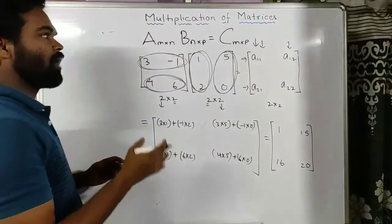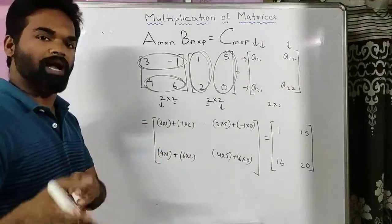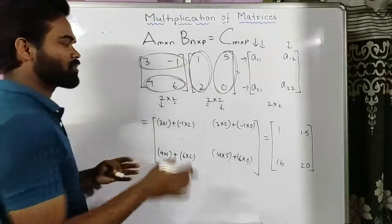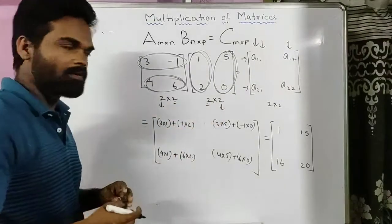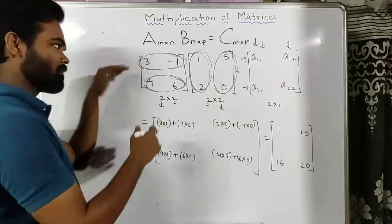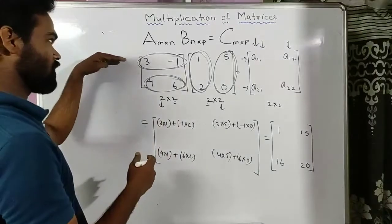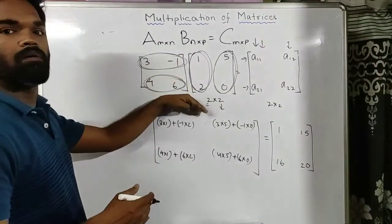And this is how we multiply two matrices. First we check whether they are compatible, and then we multiply using the logic that it's row multiplied by column.